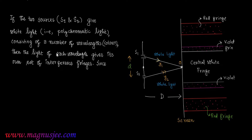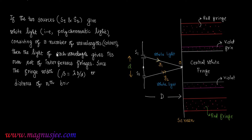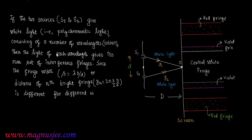The light of each wavelength gives rise to its own set of interference fringes. Since the fringe width β = λD/d, and the distance of the nth bright fringe y_n = nλD/d is different for different wavelengths, the overlapping of fringes occurs.